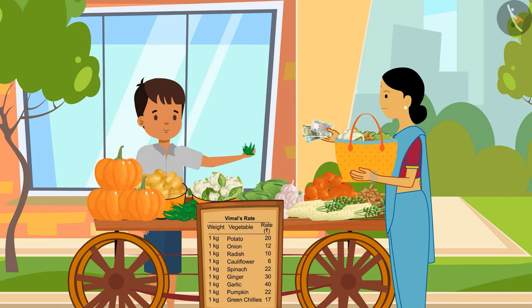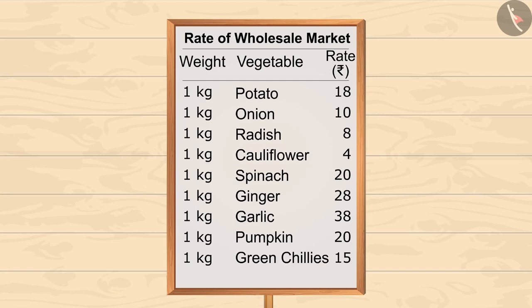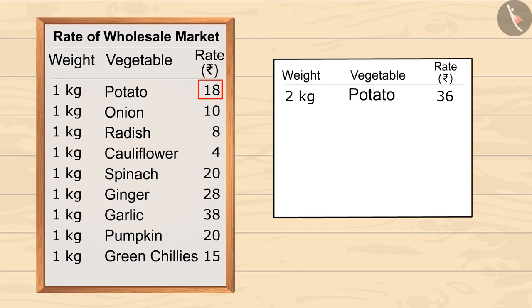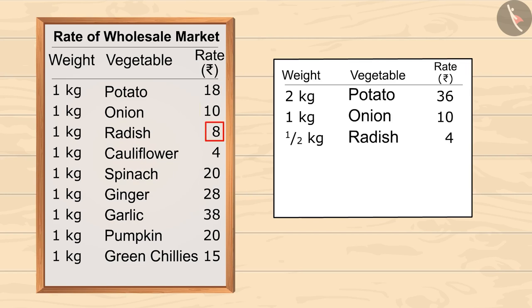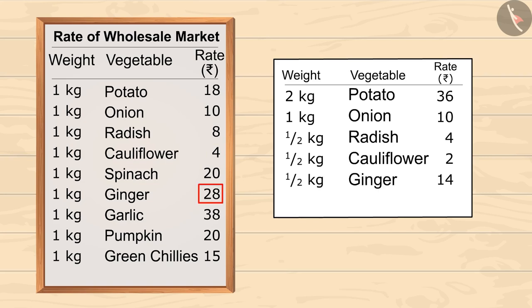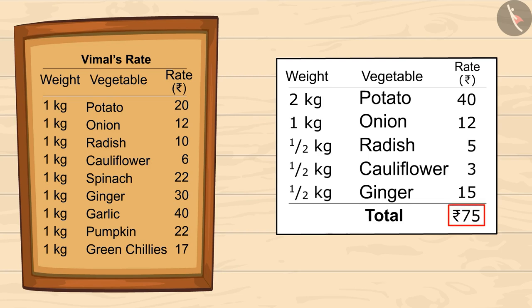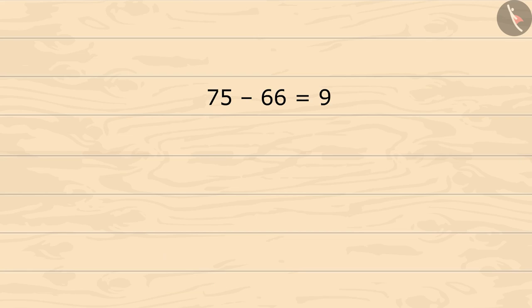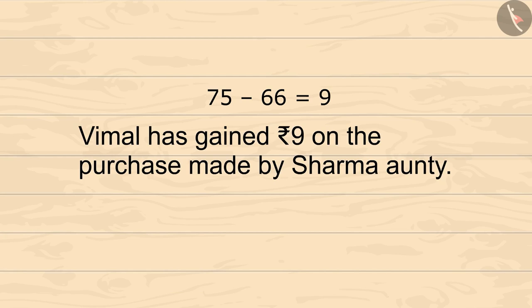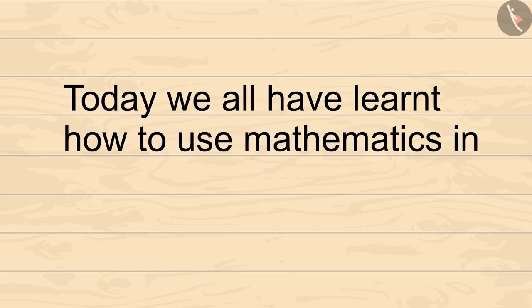Sharma auntie gave 75 rupees to Vimal. Can you guess how much profit Vimal has gained? Let's calculate together. According to the wholesale market price, Sharma auntie should give 36 rupees for 2 kg potatoes, 10 rupees for 1 kg onion, 4 rupees for half a kg radish, 2 rupees for half a kg cauliflower, and 14 rupees for half a kg ginger — a total of 66 rupees. But according to Vimal's pricing, she paid 75 rupees. On subtracting 66 from 75, we get 9. So Vimal has gained 9 rupees profit. Today we all have learned how to use mathematics in daily life activities.